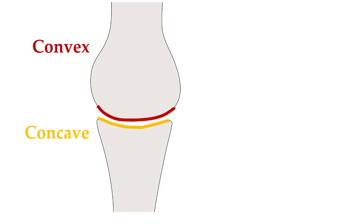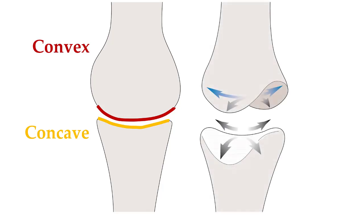Joint surfaces will have two directions: an anterior-posterior direction and a medial-lateral direction. The same bone does not need to be convex in both directions, but if one bone is convex in a direction, the other bone will be concave in that direction.